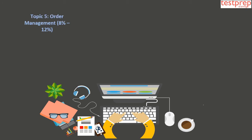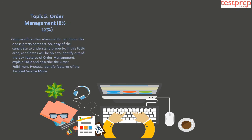Topic 5: Order Management, which comprises 8–12% weightage in the exam. Compared to other topics, this one is fairly compact. Candidates will be able to identify out-of-the-box features of order management, explain SKUs, describe the order fulfillment process, and identify features of the Assisted Service Mode.